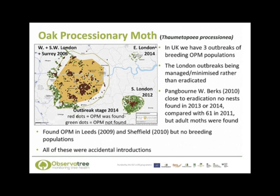Oak processionary moth introductions also occurred in Leeds in 2009 and Sheffield in 2010 but the populations did not establish. All of these outbreaks have occurred because of accidental introductions of the moth and are thought to have originated from egg plaques that were on young oak trees that were imported.